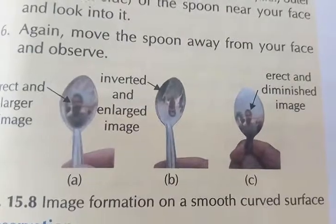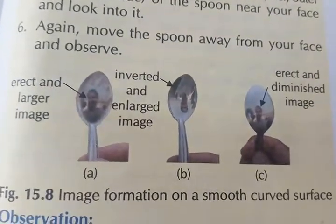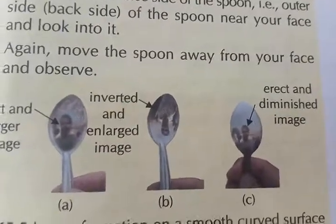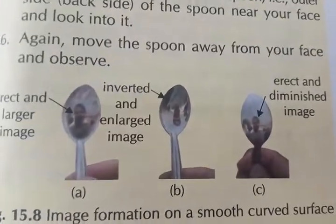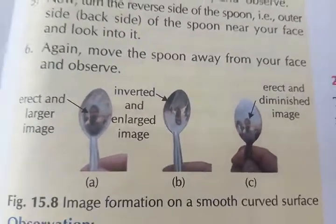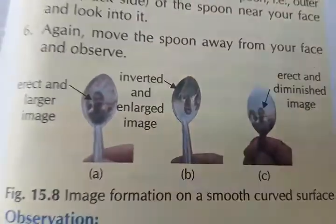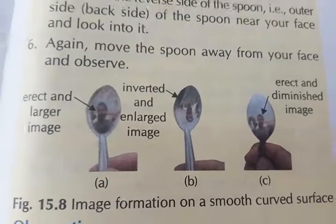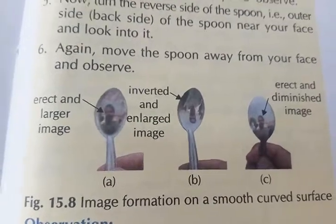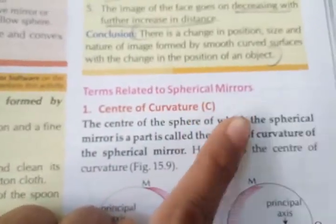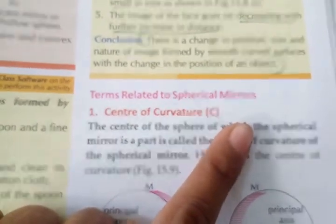Conclusion from this activity: as you change the position of the object, the size and nature of the image formed by the smooth curved surface also changes. The outer side of the spoon works like a convex mirror. So we have understood the terms related to spherical mirrors — spherical mirrors are of two types: concave and convex. The terms related to spherical mirrors will be covered in the next module.